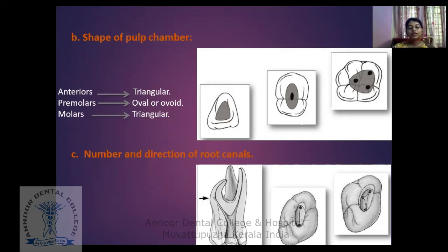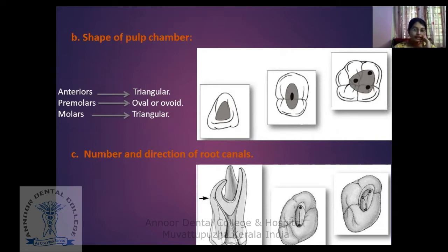The third factor is the number and direction of root canals. As with the pulp chamber, it is not similar in all teeth. In the case of molars, there can be three to four root canals. In premolars, there are two canals or a single root. And in anterior teeth, there are single roots.